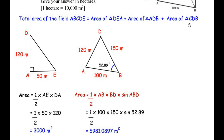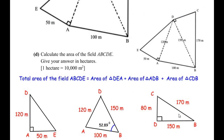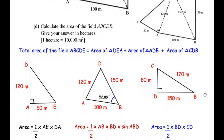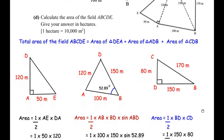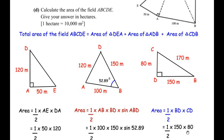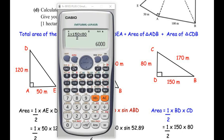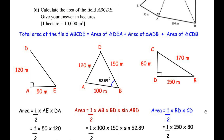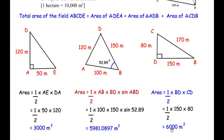For the last triangle CDB: BC is 170, BD is 150, and CD was found to be 80 meters. Since it is a right angle triangle, area equals one half times base times height — one half times 150 times 80 — giving 6000 square meters.